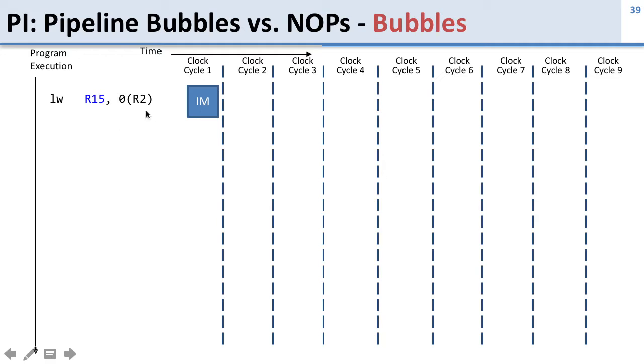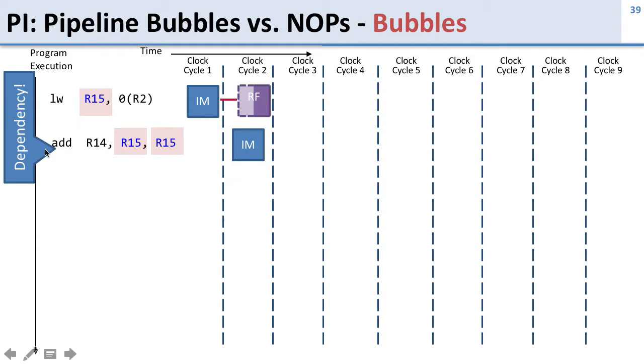Well for bubbles, we're going to go ahead and start executing the load word instruction. In the second cycle, we're going to start executing our next instruction, which is the add instruction. Then something's going to happen here. The processor itself is going to notice this dependency and notice it's too close. When the processor notices the dependency, what it's going to do is convert this instruction into a NOP in the pipeline.